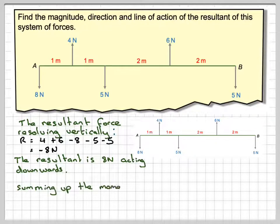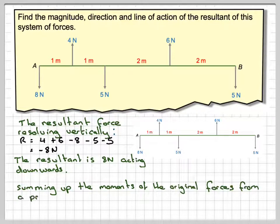If we sum up the moments of the original forces from a point, we'll just say B for the moment, this point here, but you could choose A or choose somewhere else. Now anticlockwise, we've got eight newtons times the length away from B, so it's going to be one plus one plus two plus two, which is six. So it's going to be eight times six plus five newtons times two plus two times four.